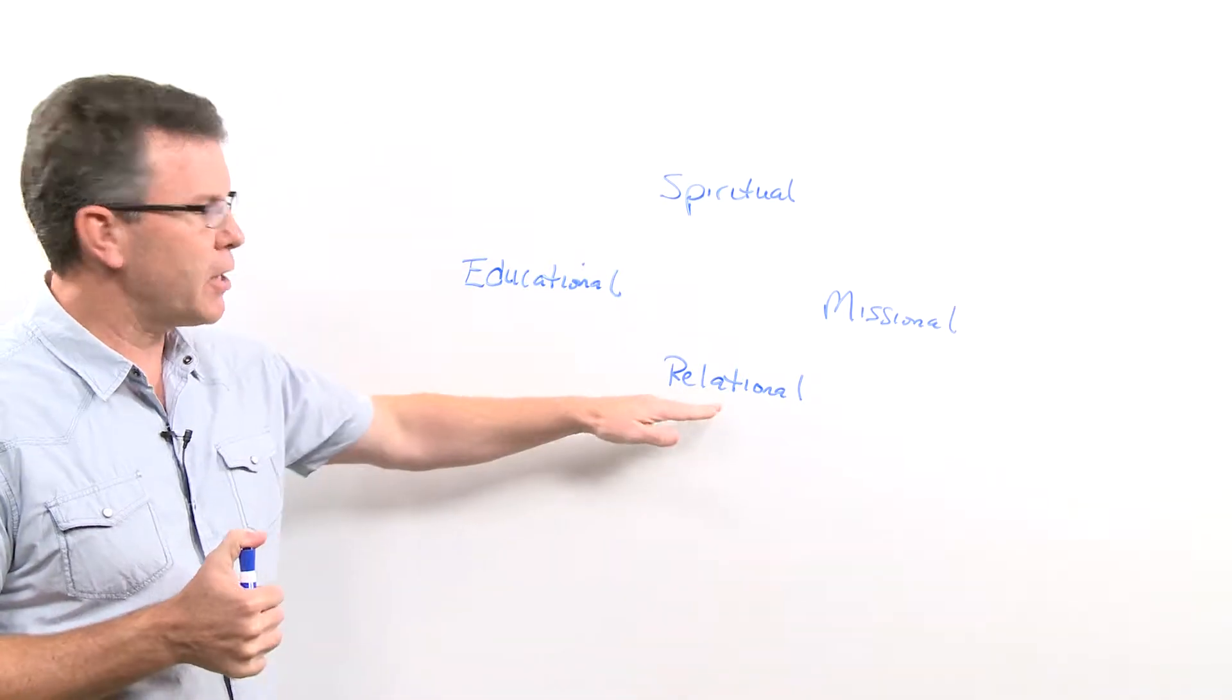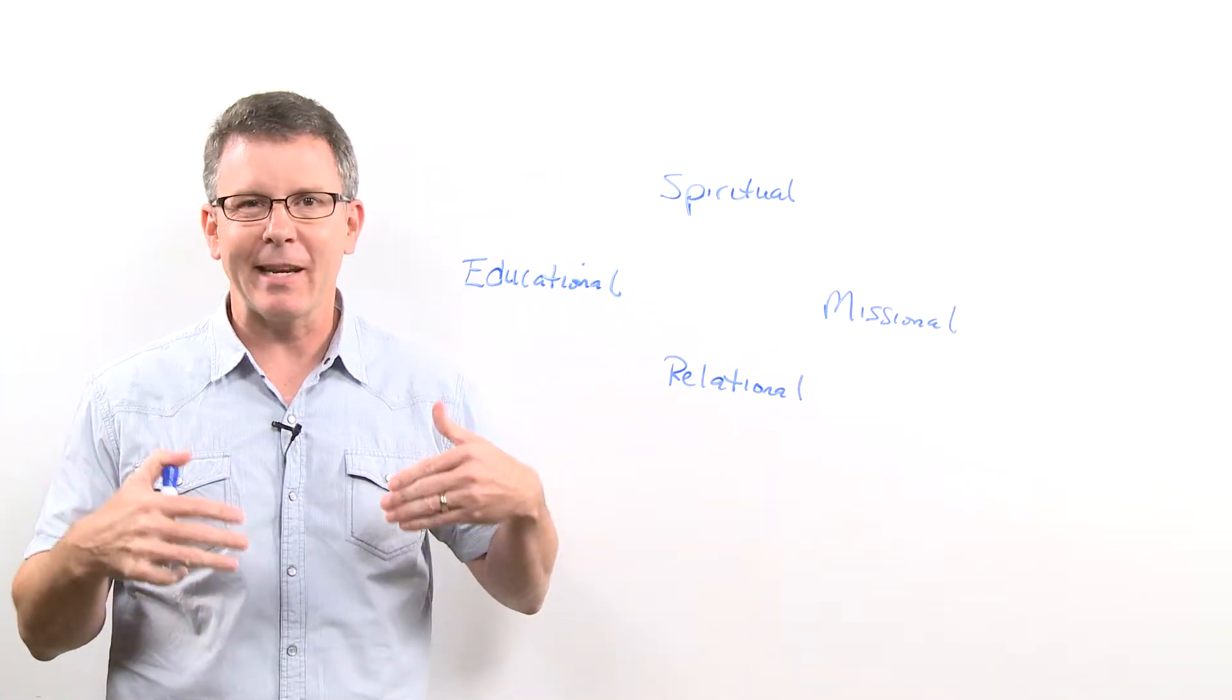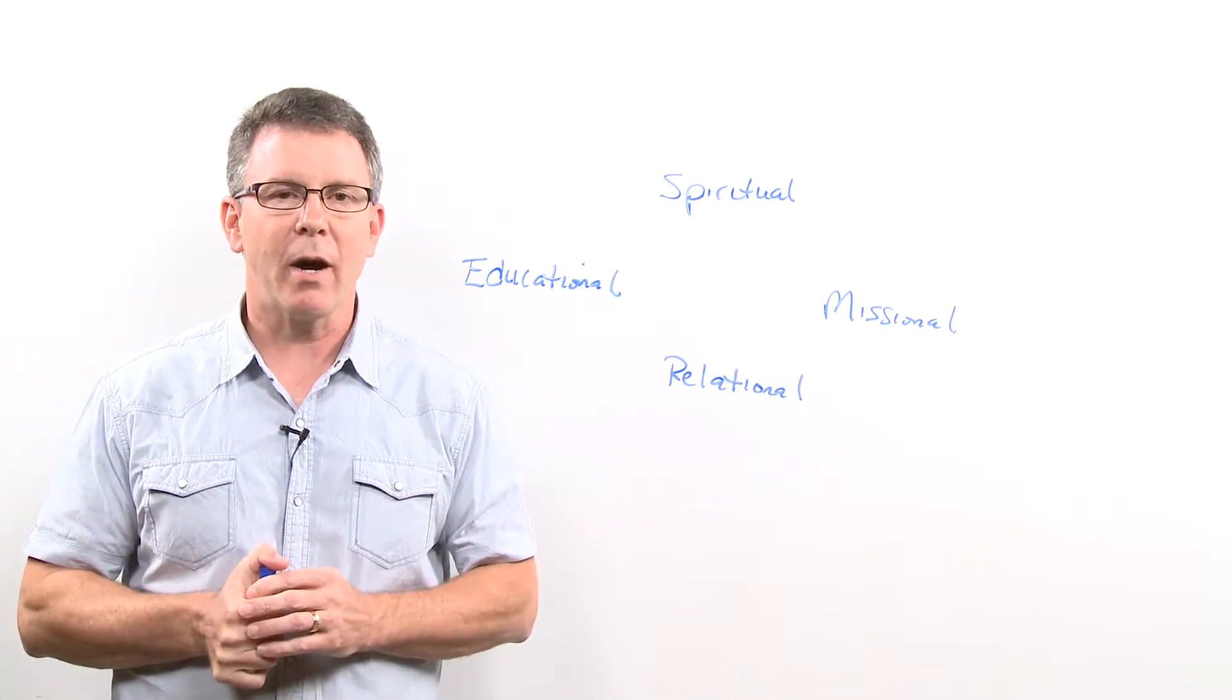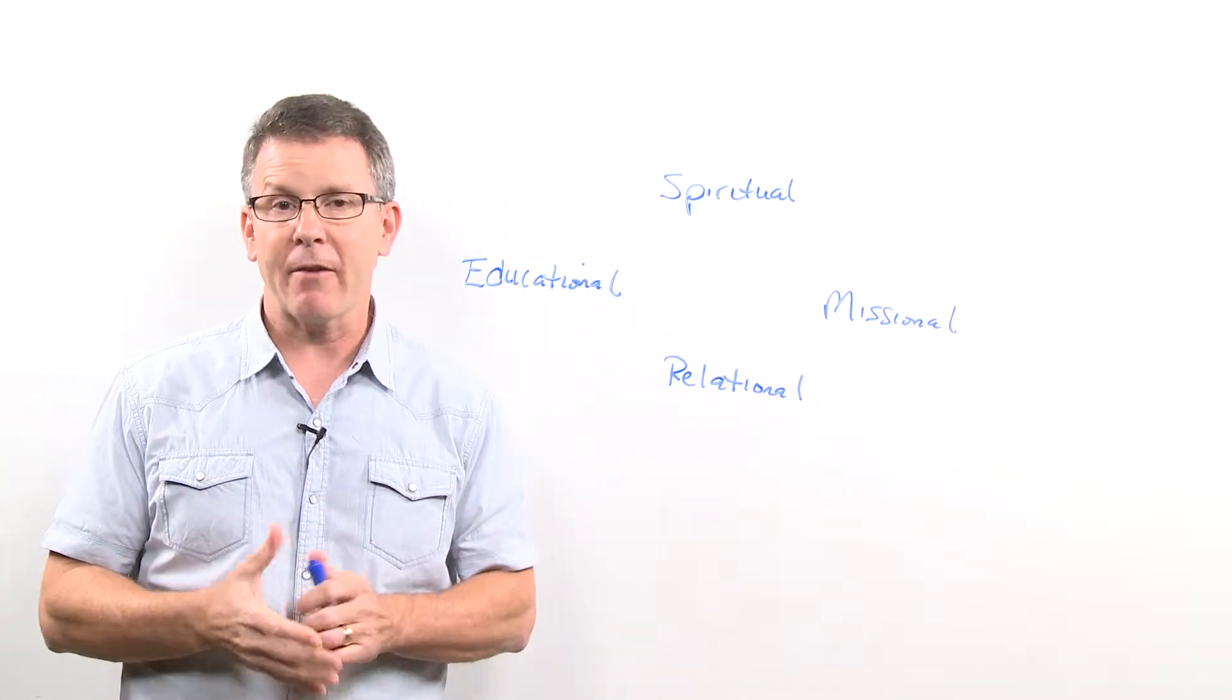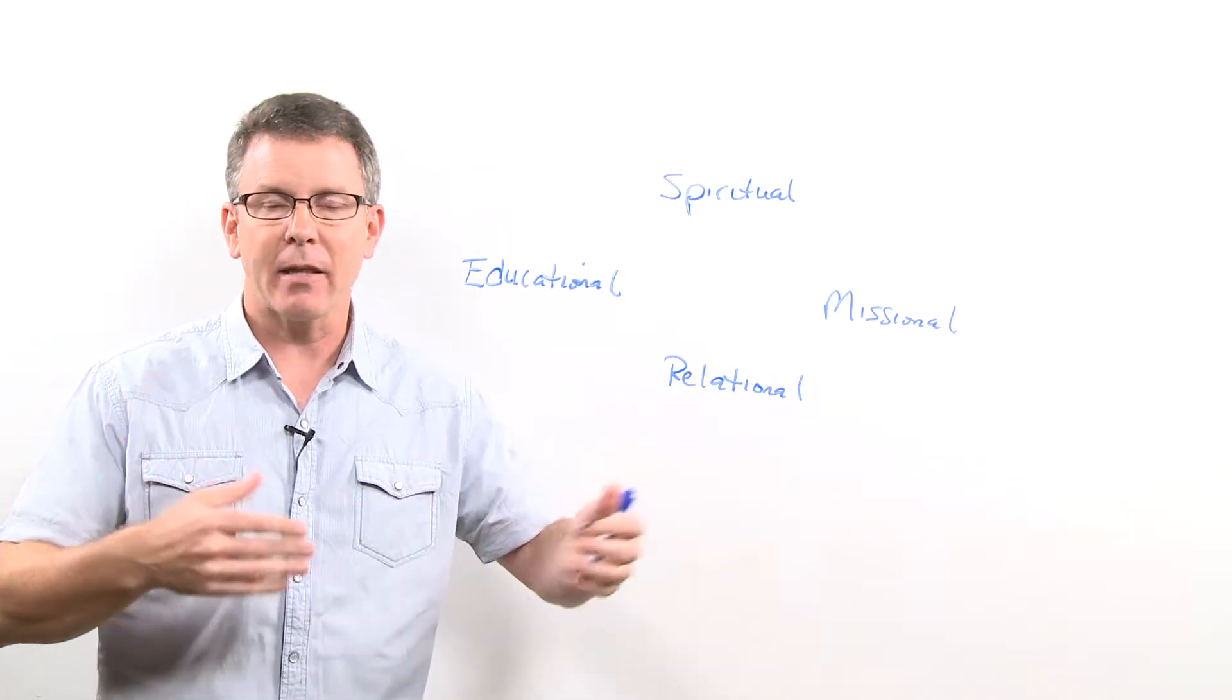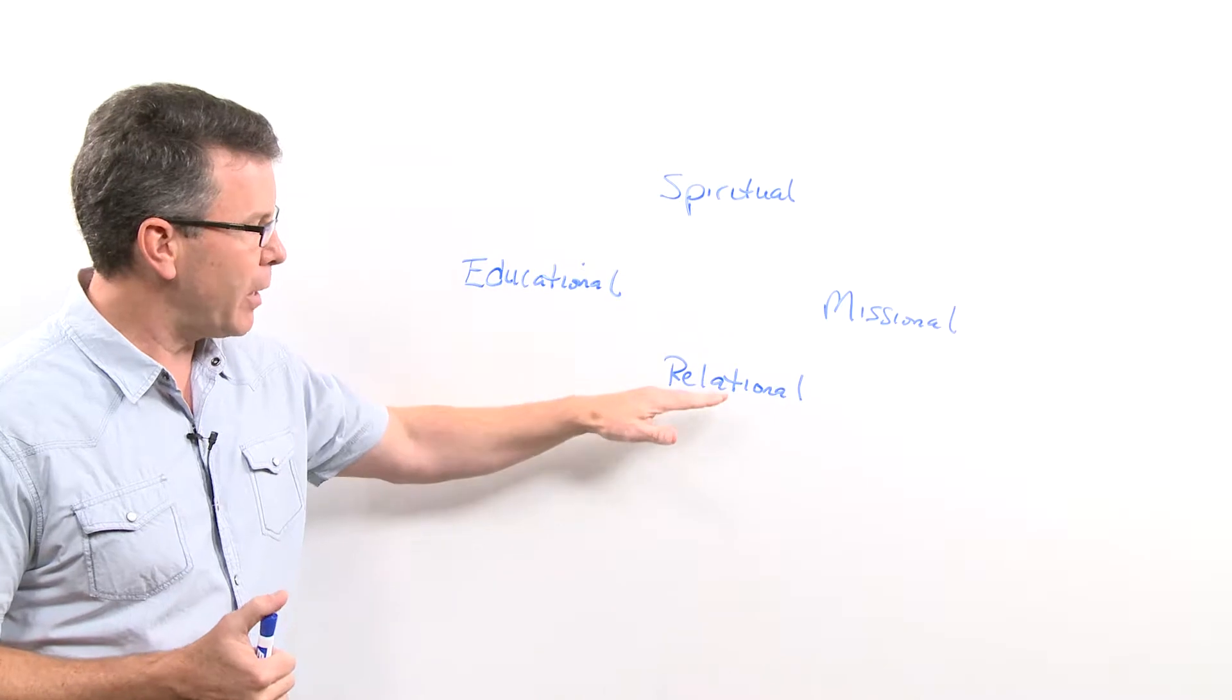The first component is the relational component. You want to make sure that you have connection time with each other. If you're in a board meeting, it's really wise sometimes to have a dinner beforehand or perhaps have it at someone's home and be relaxed and get to know each other and talk about things. It's really important to have the relational side.